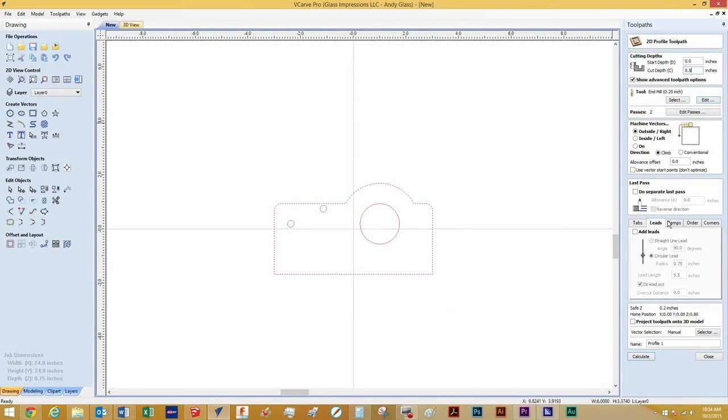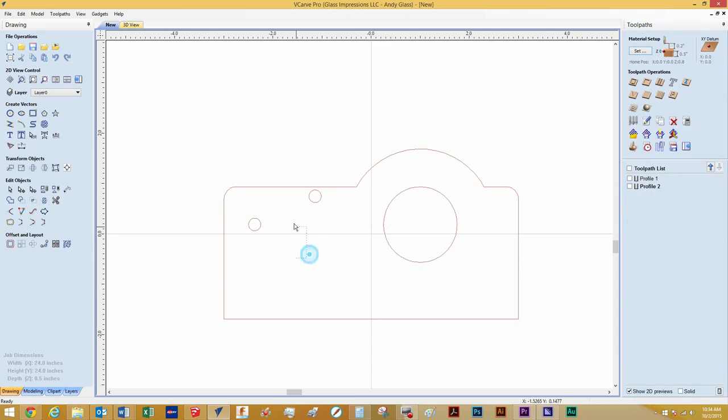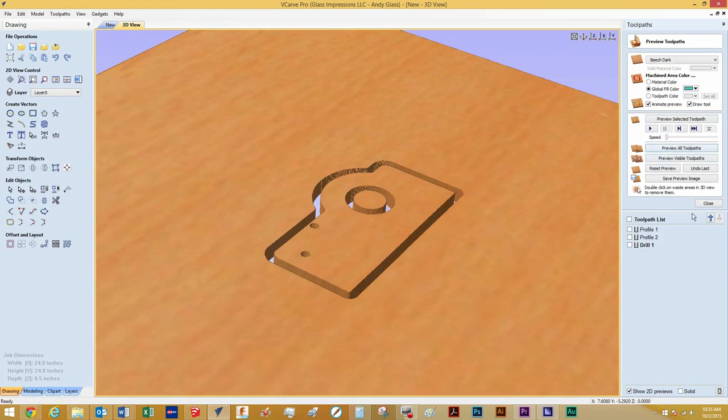I designed my parts in Google SketchUp and then I brought the 2D file into VCarve Pro. I assigned some toolpaths and saved it to my cloud storage and opened it up on my shop computer.